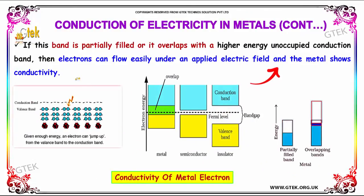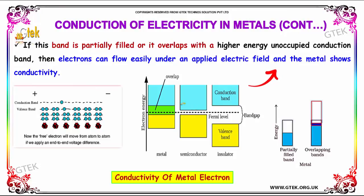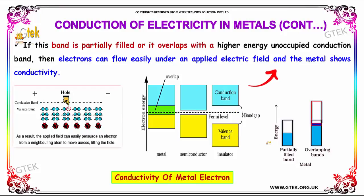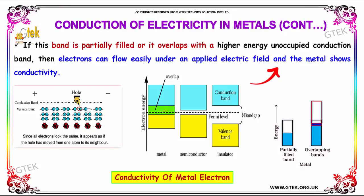If this band is partly filled, or it overlaps with a very high energy unoccupied conduction band, then electrons can flow easily under an applied electrical field and the metal shows conductivity. This is a partly filled band, and this is overlapping bands — you are able to see the overlap.